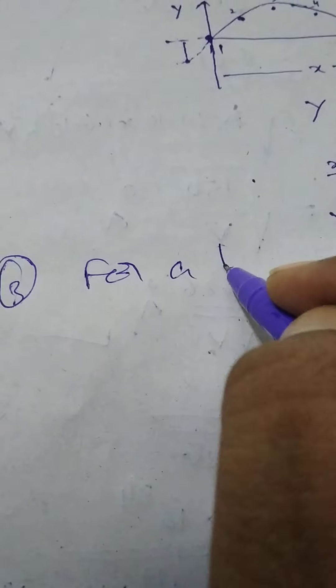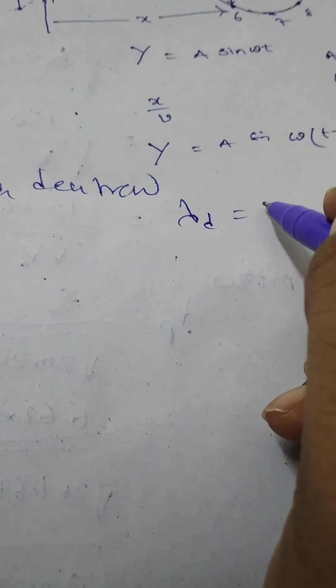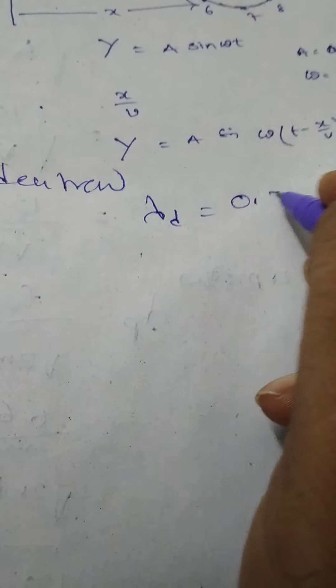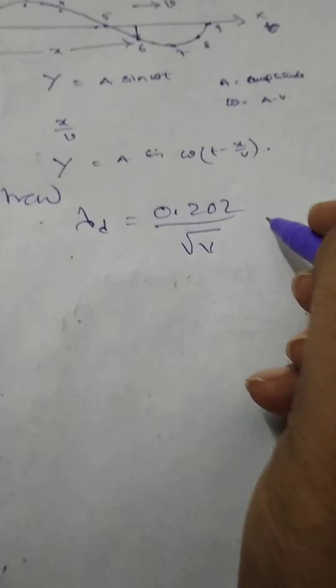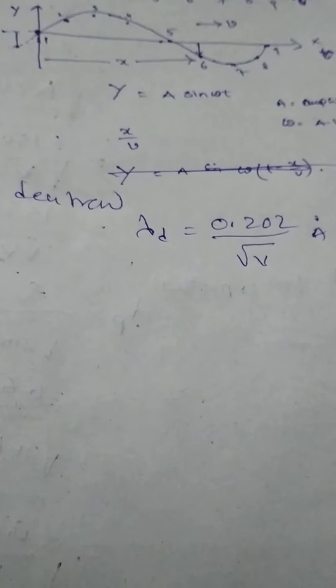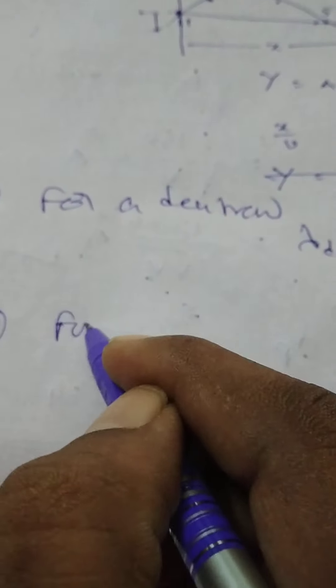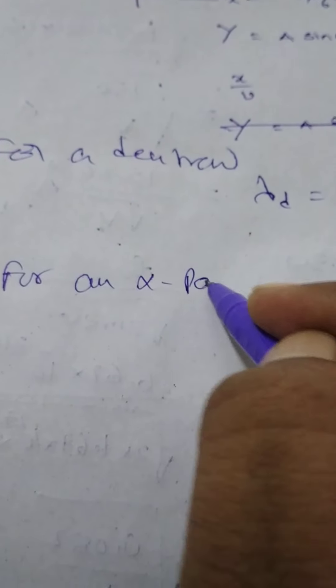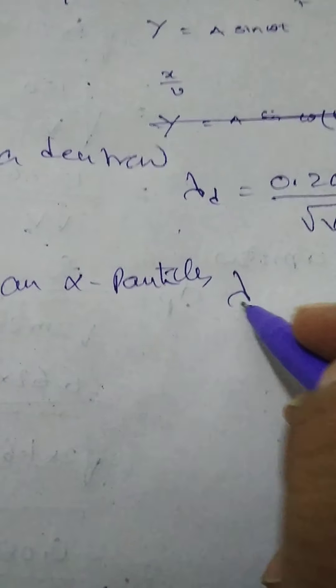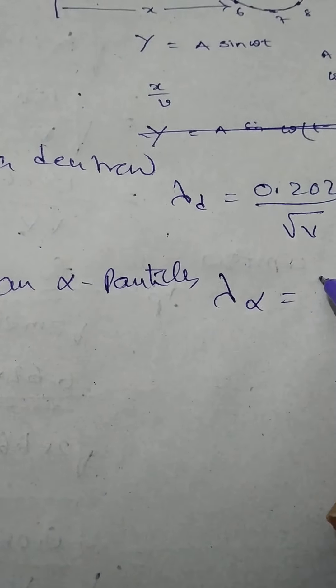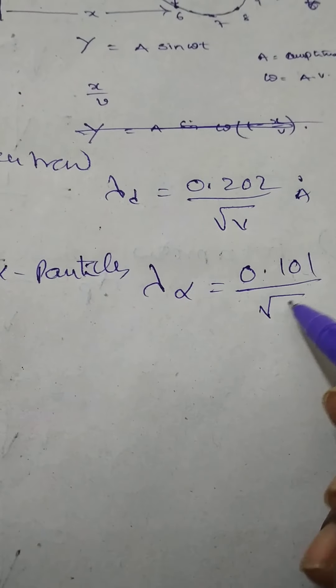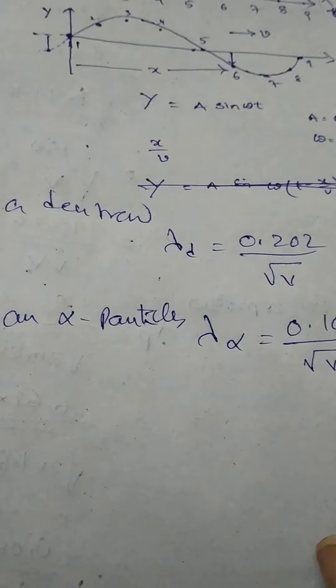Third one, for a deutron, lambda is approximately equal to 0.202 by root V angstrom units. Fourth one, for an alpha particle, lambda is given by 0.101 by root V angstrom units.